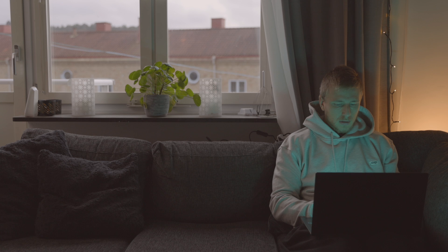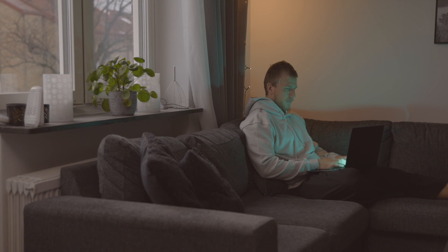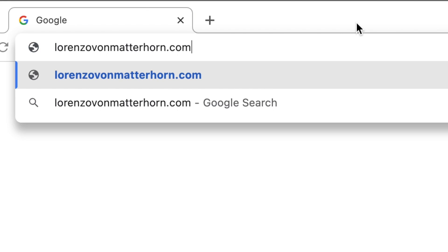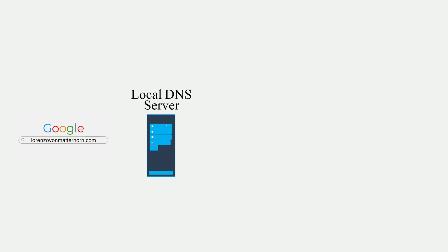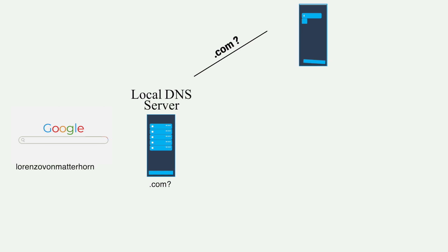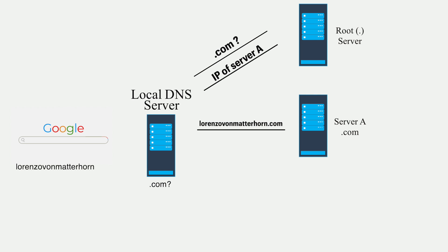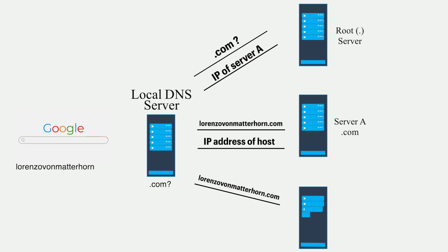But how do routers actually figure out where the servers are that host the information we're looking for? Before using the protocols discussed, the browser first has to learn where the website is located. This is called a DNS lookup and works like looking in a phone book. A local DNS server chops up the URL and figures out the IP address: first finding where to look for addresses ending in .com, then for the specific website, and finally being directed to the server with the IP address. The DNS server hands the IP address back to the browser, which then loads the website for you.